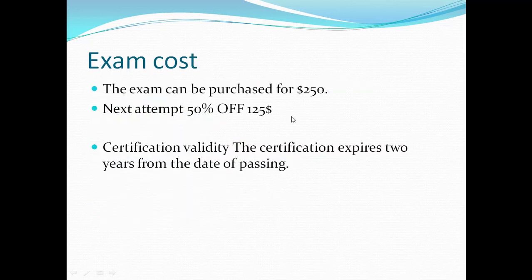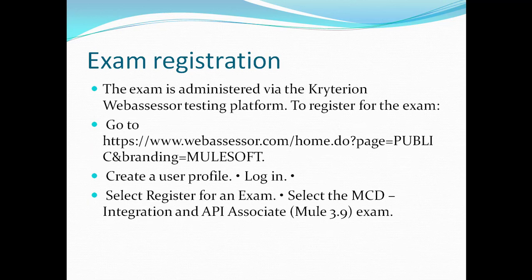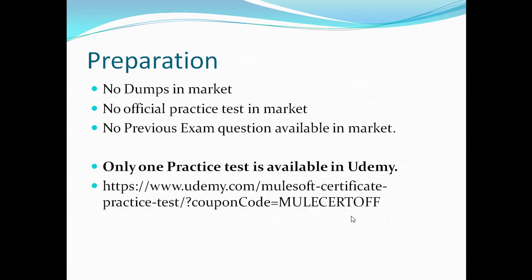The exam cost is $250. If you fail to clear on the first attempt, on the next attempt you will get 50% off, so your exam cost will be $125. The certification will be valid for two years. You can register for this examination by going to webassessor.com — just go to that URL, log in, and register for the MCD Integration API Associate Mule 3.9 exam.